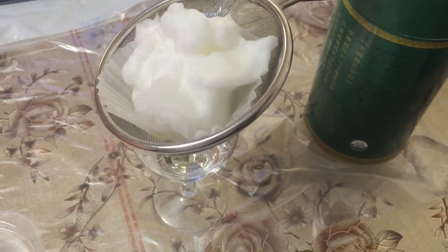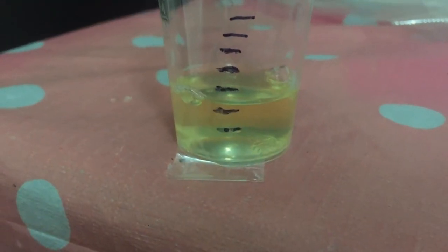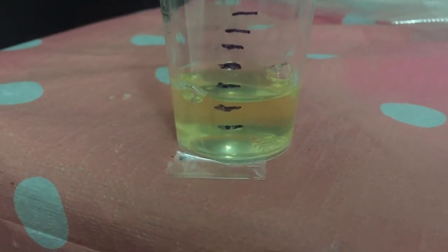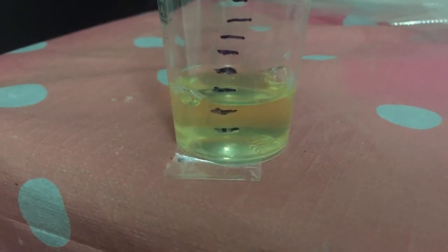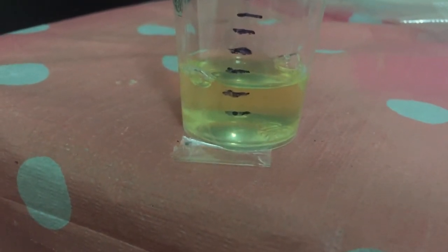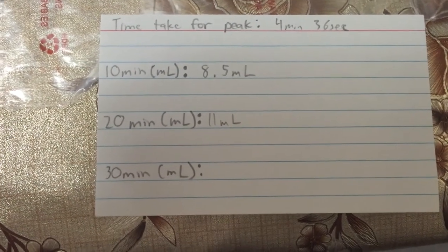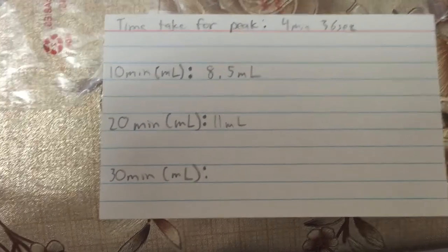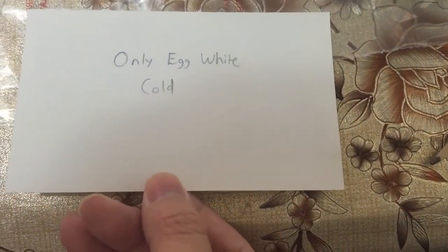20 minutes is up. Now it's time to check the egg white control again. After 20 minutes, it seemed like around 11 milliliters. I have recorded the 20-minute mark of 11 milliliters for the egg white only control.